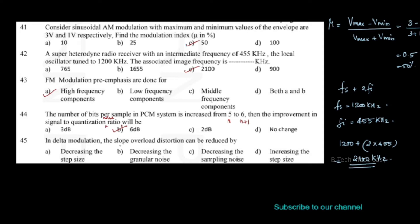In delta modulation, the slope overload distortion can be reduced by: Option A: decreasing the step size. Option B: decreasing granular noise. Option C: decreasing the sampling noise. Option D: increasing the step size. Increasing the step size reduces slope overload distortion, so option D is correct.